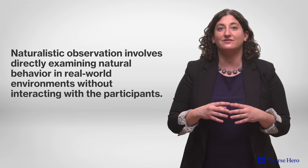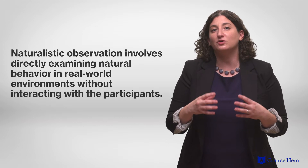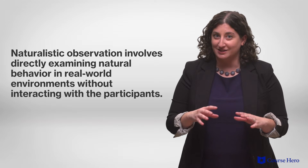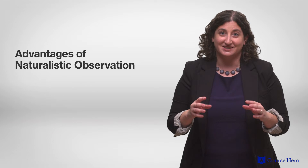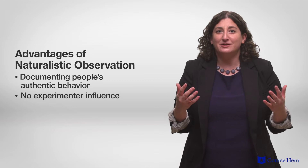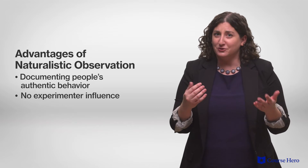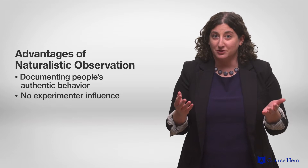Naturalistic observation involves directly observing natural behavior in real-world environments without interacting with the participants. For example, if you wanted to learn more about childhood bullying, you might observe children on a playground. Naturalistic observation has a lot of advantages, including being able to document people's authentic behavior without worrying about how the experimenter might be influencing the behavior being observed.